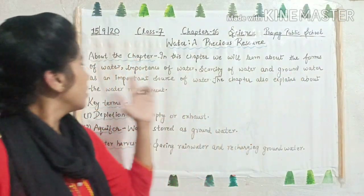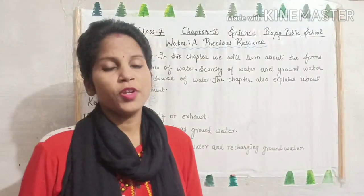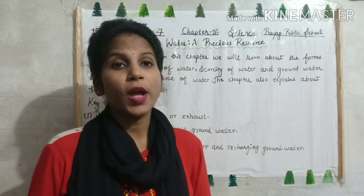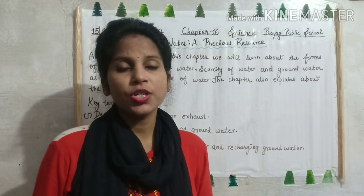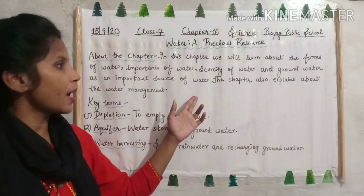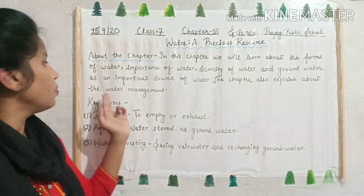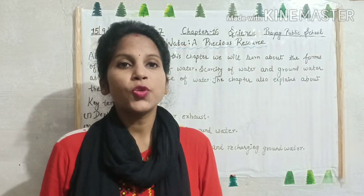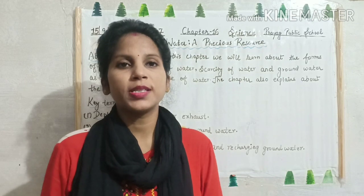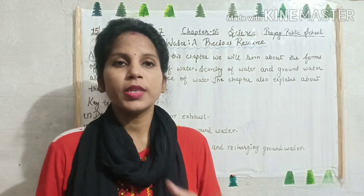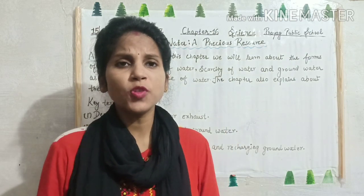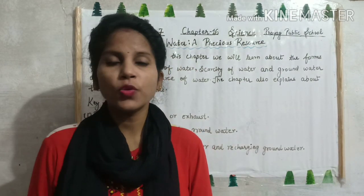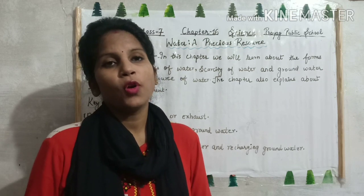Then underground water as an important source of water. The water which is found below the ground is also an important source of water for drinking, irrigation and other purposes. Then in this chapter we will also study about water management. Water management means the use of water properly and judiciously without wasting it. In this chapter we studied different forms of water, shortage of water, importance of water, underground water as an important source, and water management.